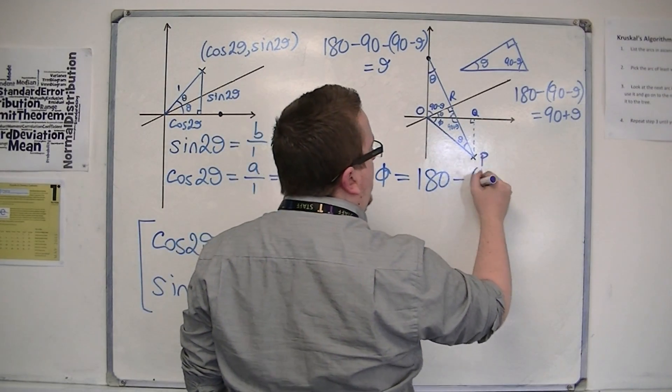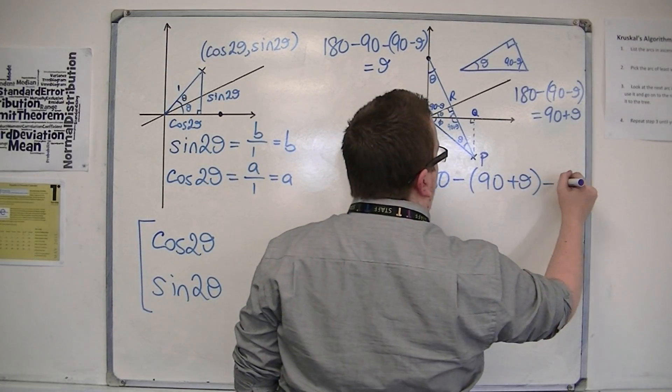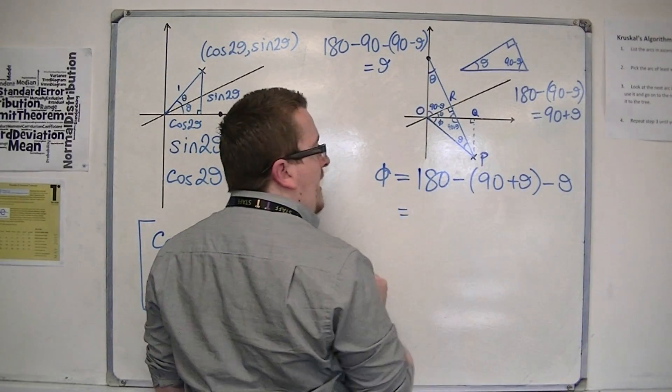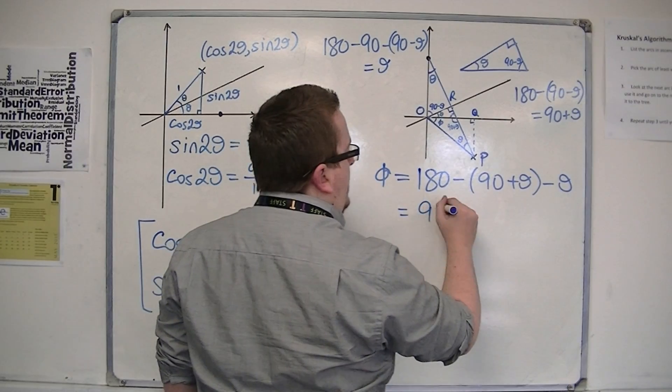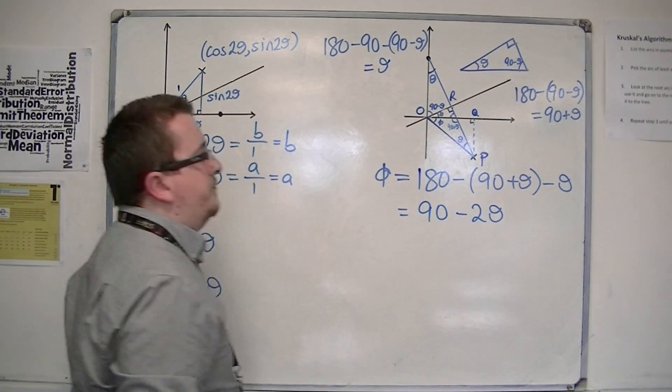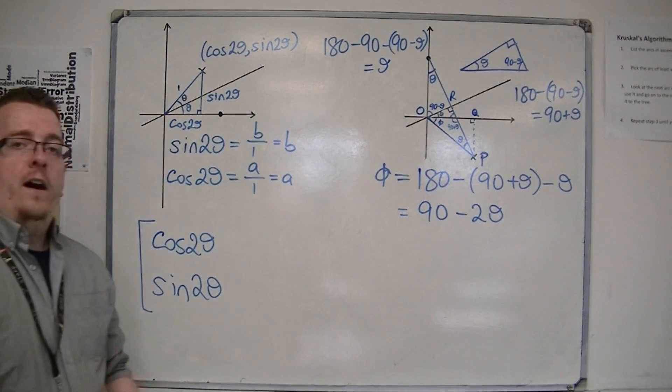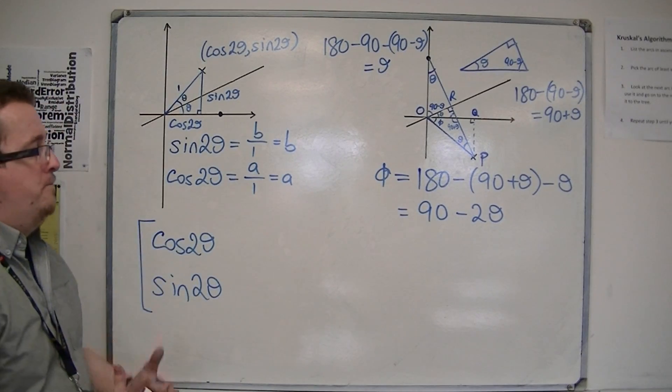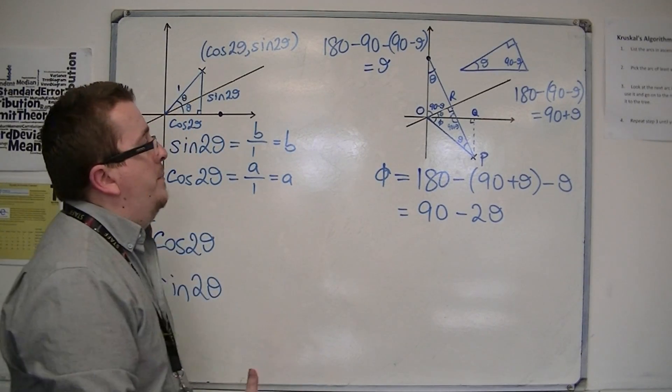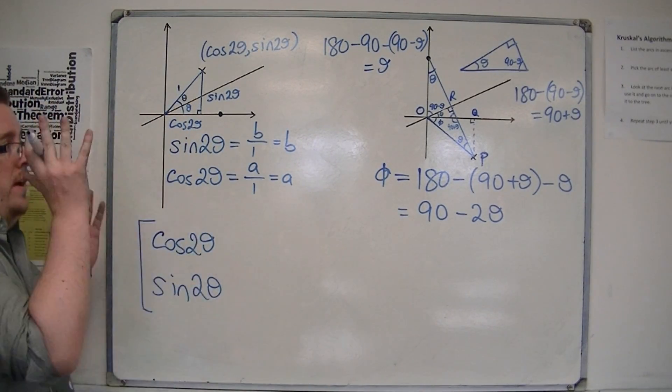So 180 take away the 90 plus theta, take away the theta, would leave me with 90 minus 2 theta. So finally I have phi, and that's really what I want, because that opens up everything else.